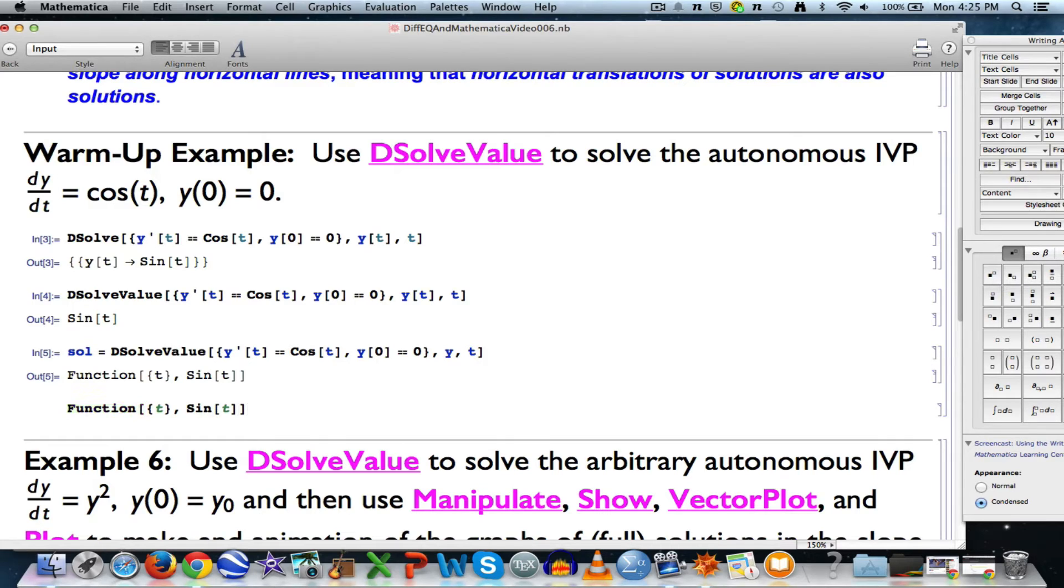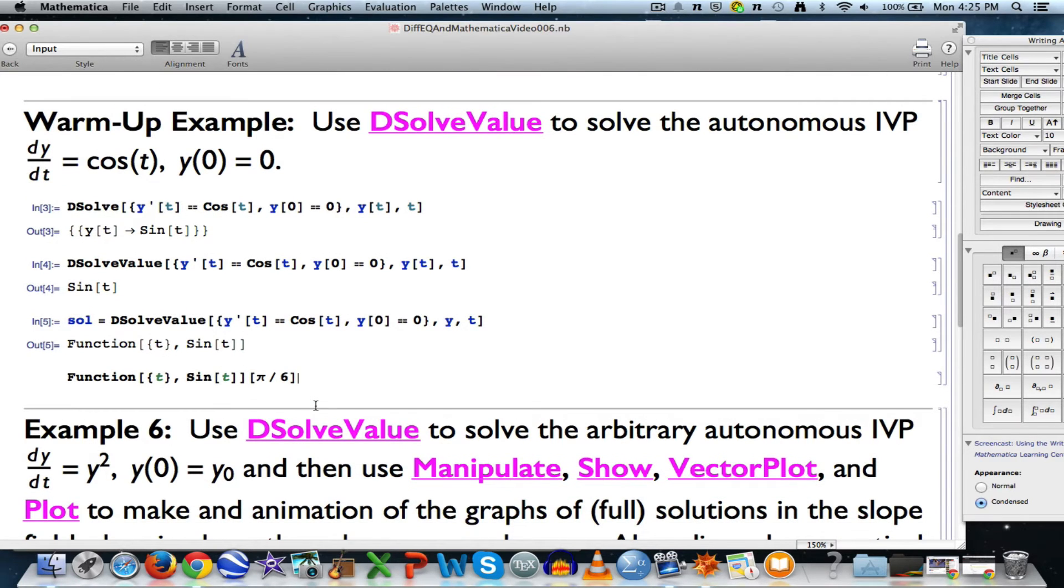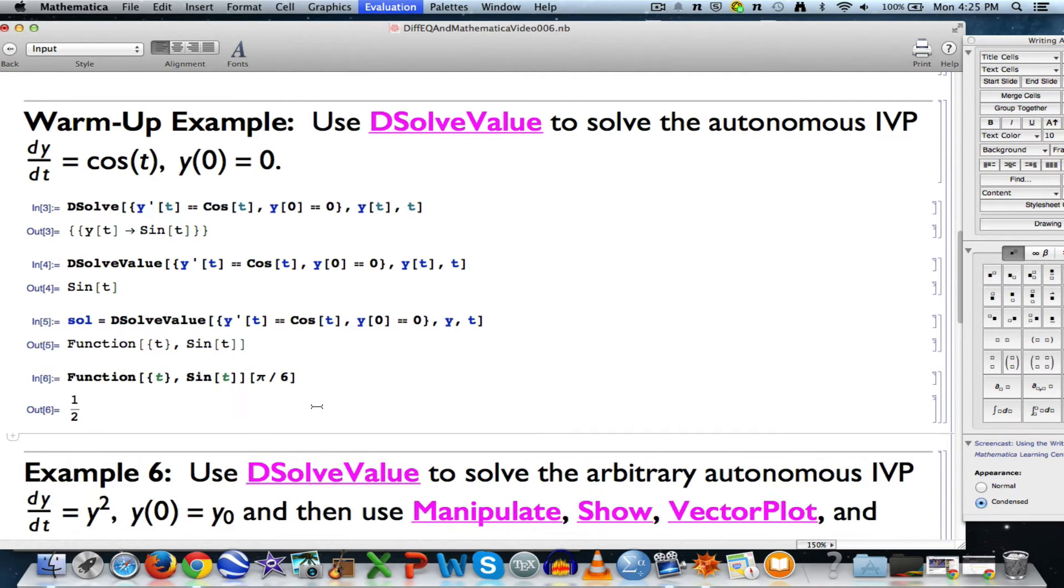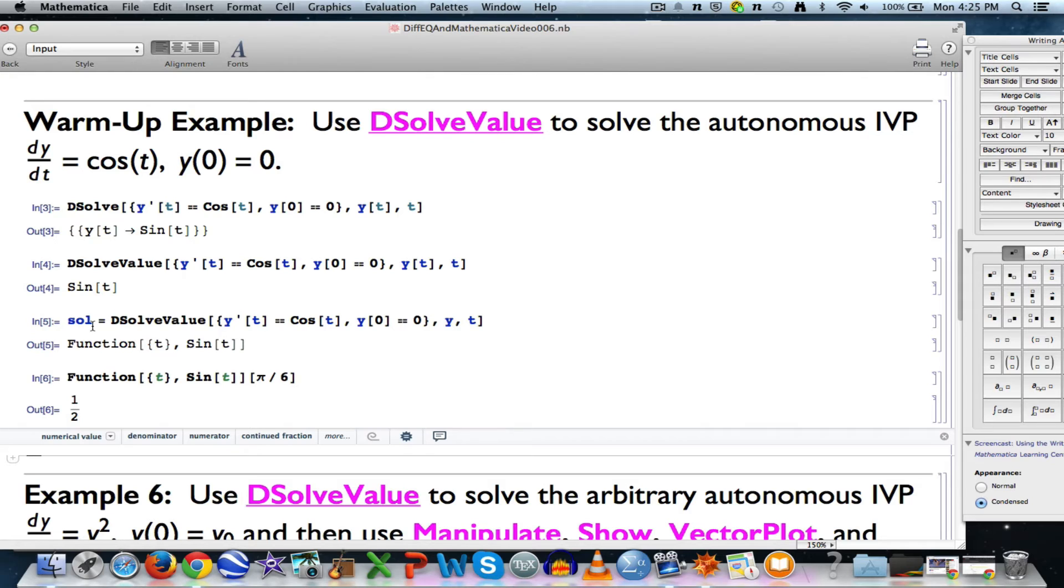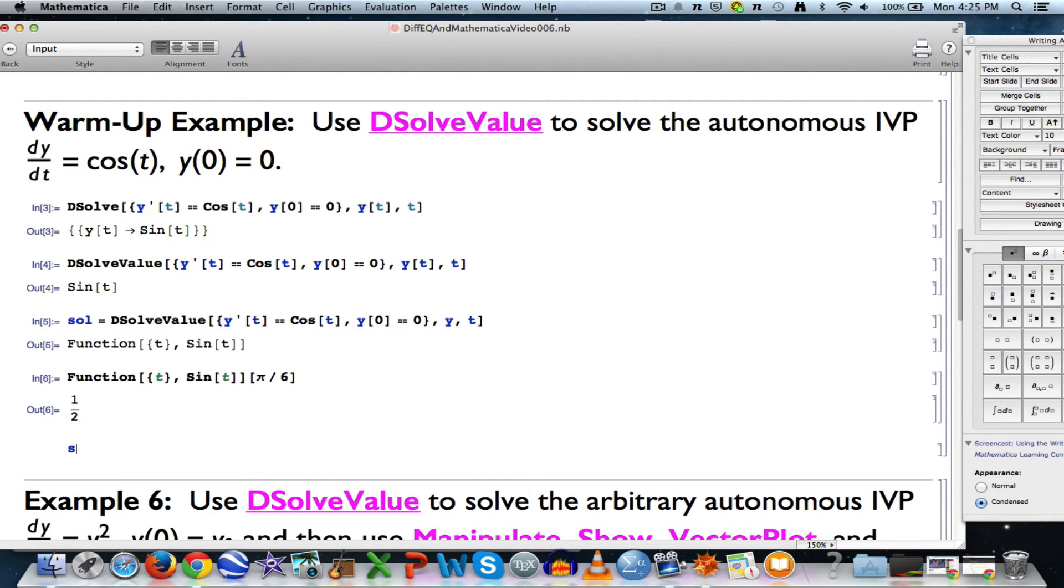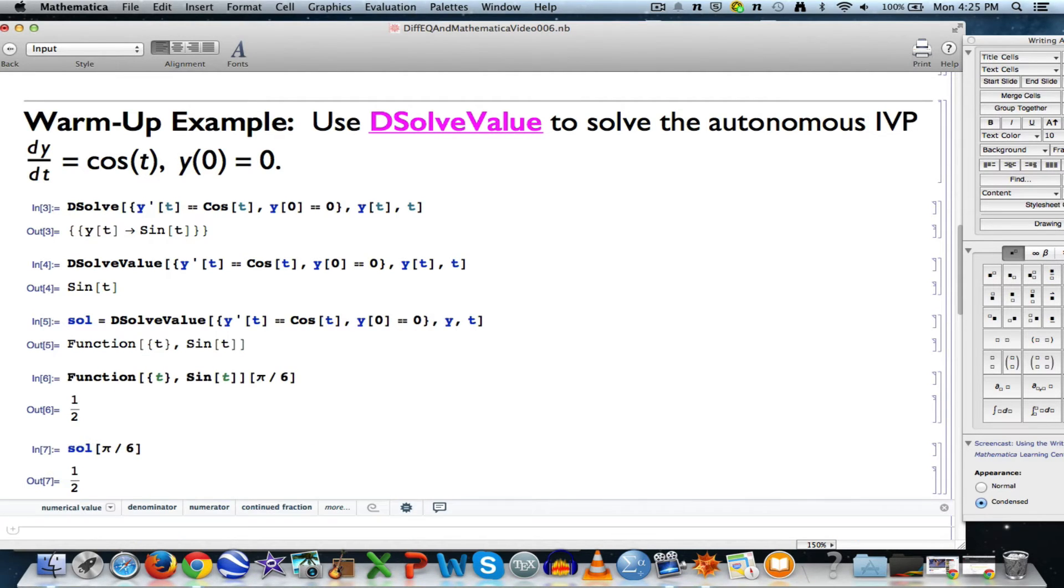Let me emphasize that this is the sine function by evaluating it at, for example, pi over 6. Use square brackets and put pi over 6 to the right of it here. This will evaluate the sine function at pi over 6, which you should remember is 1 half. Also, since I stored this pure function in sol, I can do sol of pi over 6, and also get 1 half.